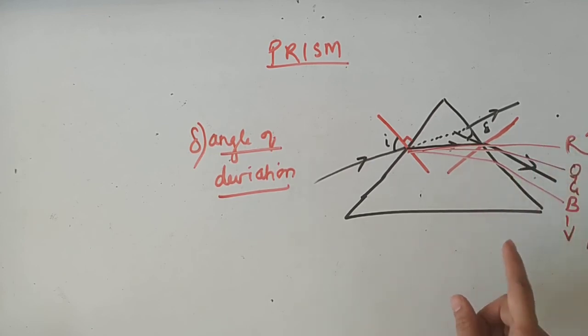Blue light which is the most bent, so we get seven colors of light. This process is known as dispersion of light, and this band we call spectrum. So this is how dispersion takes place.